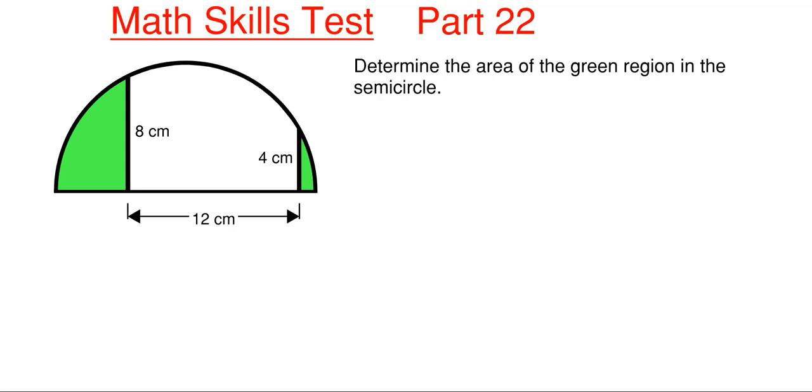And so what we got going on here is that we have to determine the area in the green region shown inside the semicircle and this will be our 22nd part of our math skill series. So we have a few pieces of information that we know about this semicircle. We have one line segment which is eight centimeters and another one which is four centimeters and these two segments are separated by 12 centimeters.